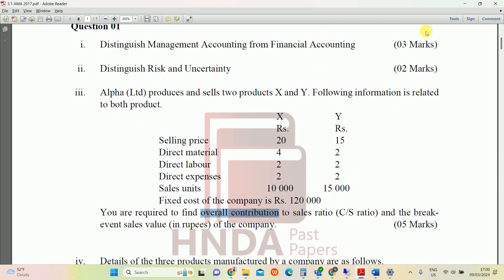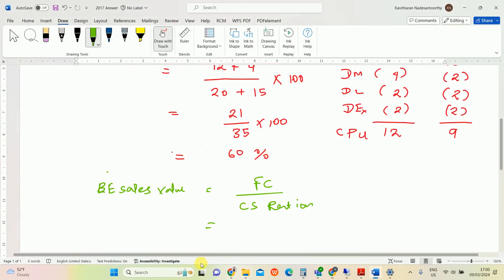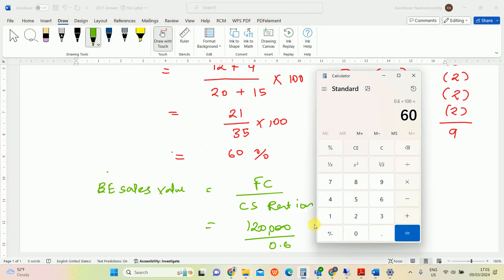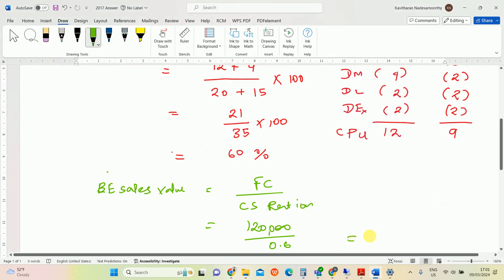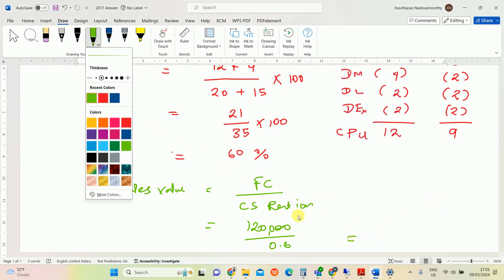So 120,000 divided by 60 percent, so 0.6. Let's calculate: 120,000 divided by 0.6 is 200,000. So answer is 200,000.